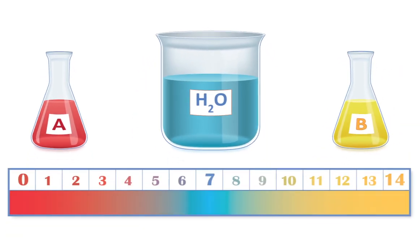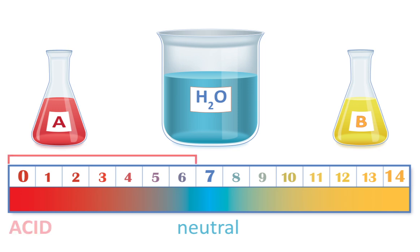Measured on a scale of 0 to 14, solutions with a pH of less than 7 are acids, while solutions with a pH of greater than 7 are bases.